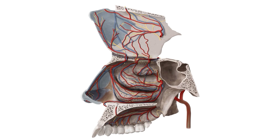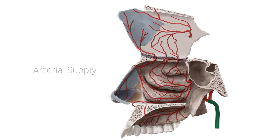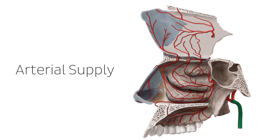So let's begin with the arterial supply. The nasal cavity has a very rich blood supply, derived from both the internal carotid artery and the external carotid artery, which is highlighted in this image in green. The external carotid artery has many branches, and part of the blood supply to the nasal cavity is derived from two of these branches: the facial artery and the maxillary artery.